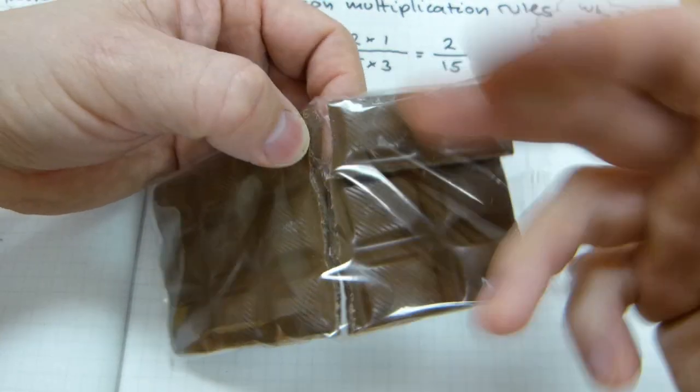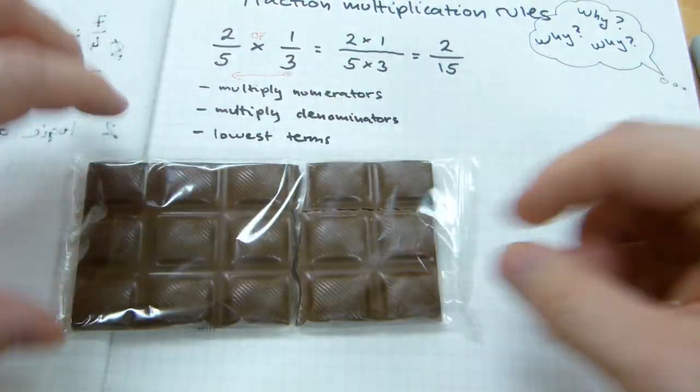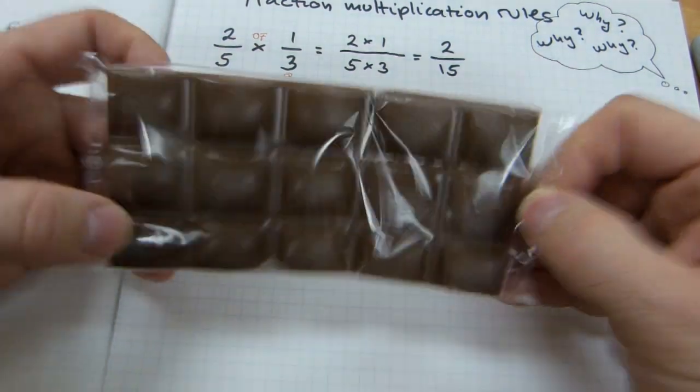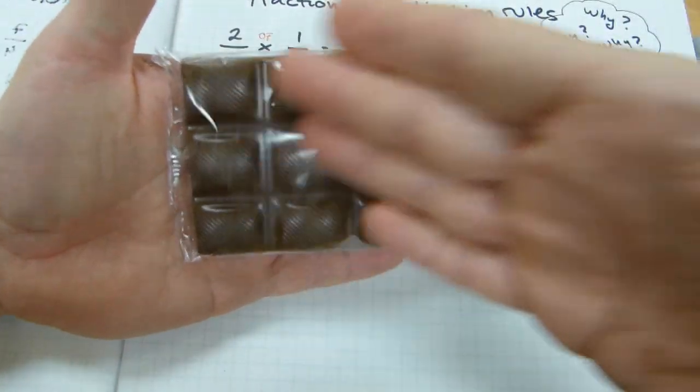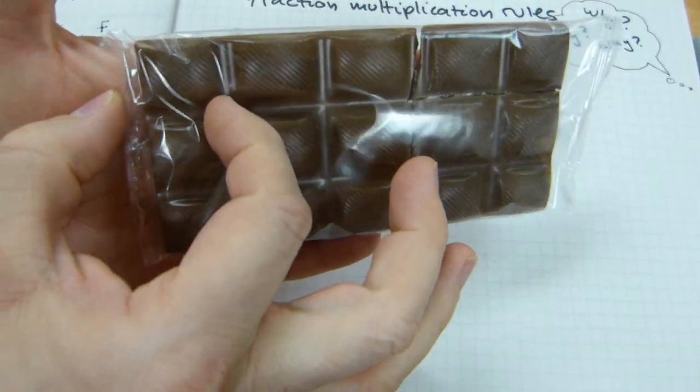So 1 third, 2 thirds, 3 thirds. This is exactly 1 third of this small chunk. Now, the answer here, following the rules, is 2 fifteenths. How is 2 fifteenths making sense in this case?